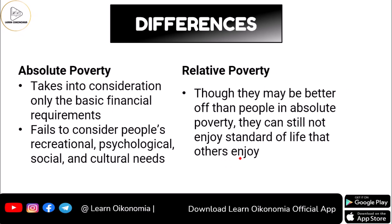In the case of absolute poverty, we consider only the basic requirements of people, and it also fails to consider the other needs of people. Persons will have different needs like entertainment needs, recreational needs, and social or cultural needs. We do not consider all these needs when we measure absolute poverty. When it comes to relative poverty, these people would be considered better off than people who are already in absolute poverty.